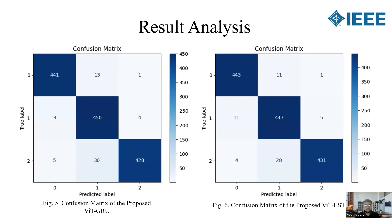The performance of each hybrid model was compared quantitatively. The ViT-LSTM model achieved the highest accuracy of 96.67%, outperforming ViT-RNN at 93%, ViT-GRU at 95.51%, and the baseline ViT at 95%. Precision, recall, and F1 score were also high across all cases, particularly for COVID-19 detection with a 97% recall rate. These results confirm the effectiveness of integrating ViT with sequential models for medical imaging.